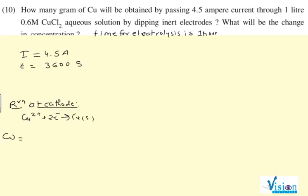Weight equals to M×I×t upon n×F. Copper's atomic weight is 63.5, current is 4.5 ampere, time is 3600 seconds, number of electrons exchanged is 2.